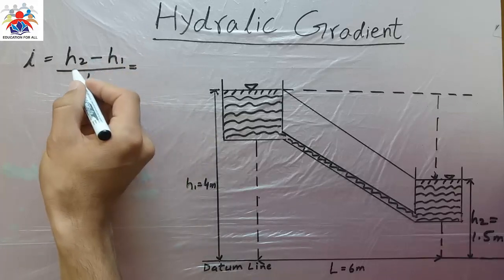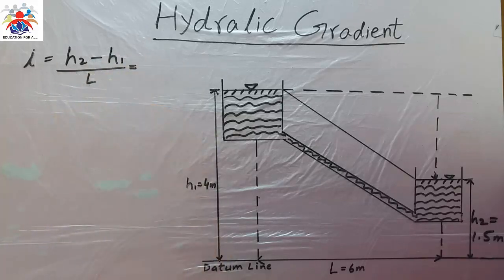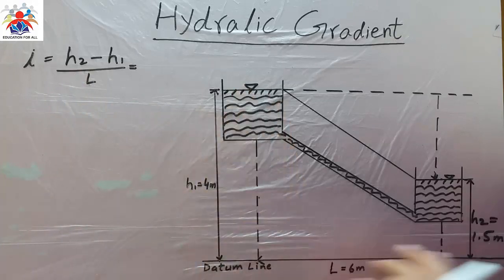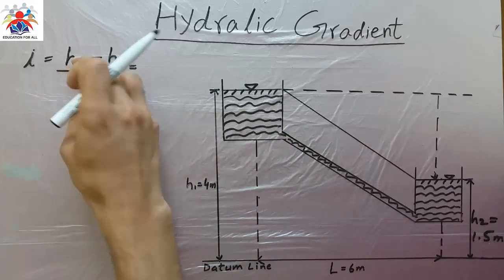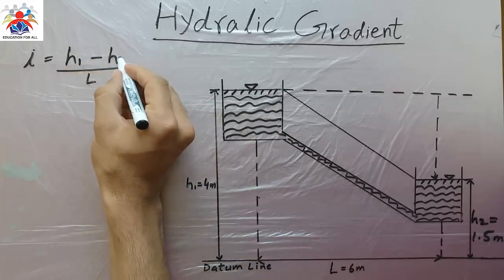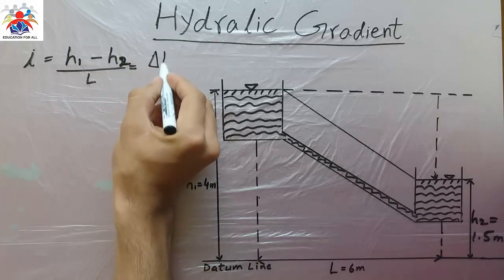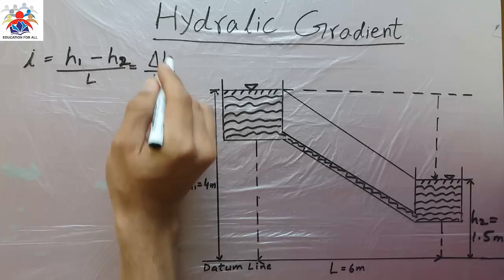What is h2 and what is h1? h1 is the highest elevation and h2 is the lowest elevation. It's supposed to be the other way around - h1 minus h2. So we will get delta h divided by L, which is change in height.